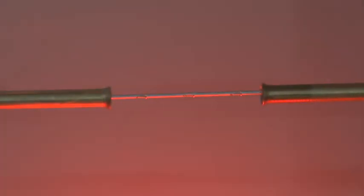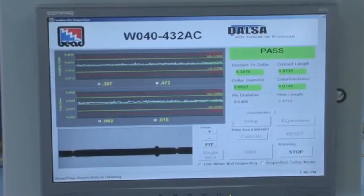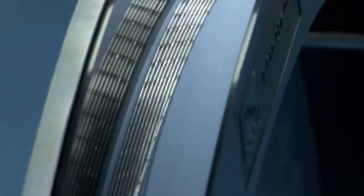Each True Grip Pin is 100 percent vision inspected. Five critical dimensions are checked on each pin before it gets wound onto our reel, guaranteeing uniformity and more efficient processing.